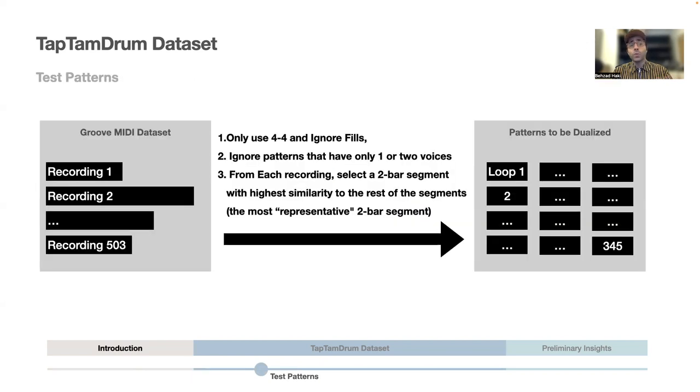To gather loops for the dualization experiments, we selected 345 two-bar patterns from the 503 recordings available in the GrooveMedia data set. Each of the selected patterns were extracted from a single recording, so that the diversity of the original data set was captured as much as possible.